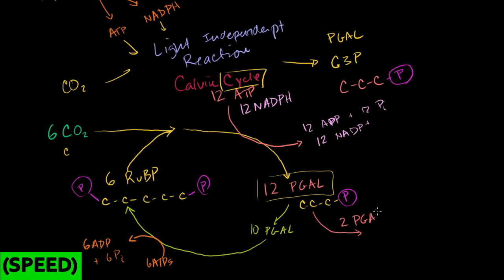So I have 2 PGALs left. And these can then be used, and the reason why I used 6 and 6 is so that I get 12 here, and I get 2 here. And the reason why I have 2 here is because 2 PGALs can be used to make a glucose, which is a 6-carbon molecule. Its formula we said before, C6H12O6.